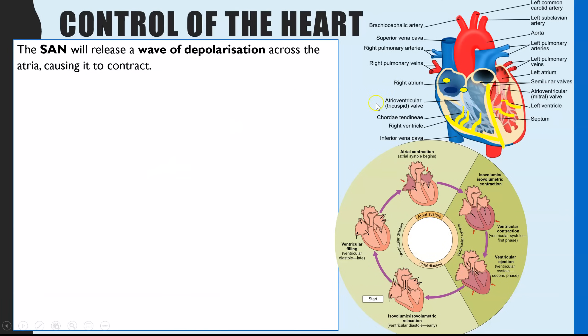Step one: the SAN releases a wave of depolarisation across the two atria, and that is what causes atrial systole — both atria will contract.